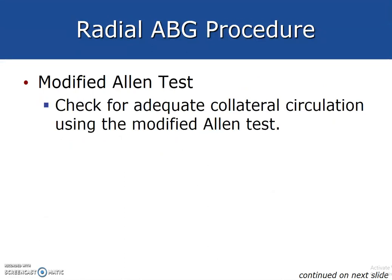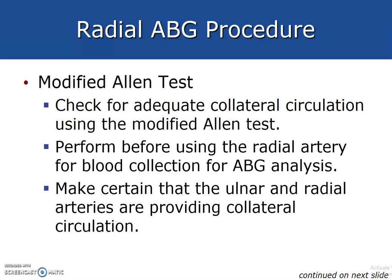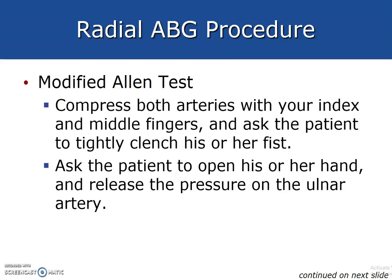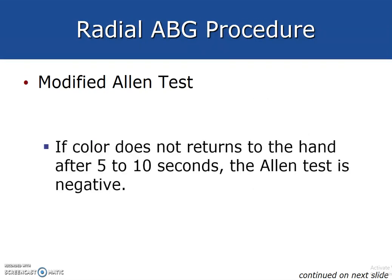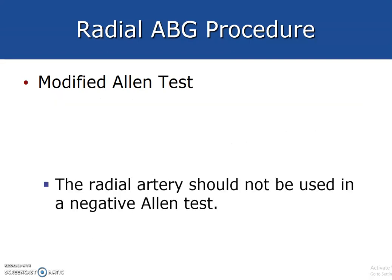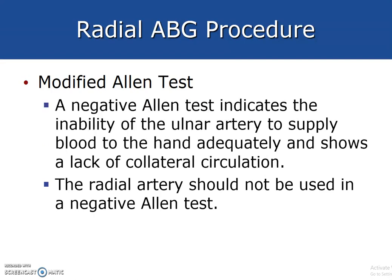The modified Allen test checks for collateral circulation in the radial artery and is performed before using the radial artery for ABG collection to confirm that the ulnar and radial arteries are providing collateral circulation to the hand. Compress both arteries with your index and middle fingers, ask the patient to tightly clench their fist, then ask the patient to open their hand and release the pressure on the ulnar artery. The Allen test is positive when the hand fills with blood within 5 to 10 seconds. If color does not return within 5 to 10 seconds, the test is negative, indicating the ulnar artery cannot adequately supply blood to the hand — the radial artery should not be used.